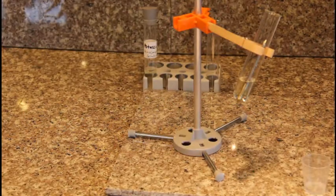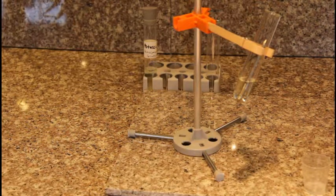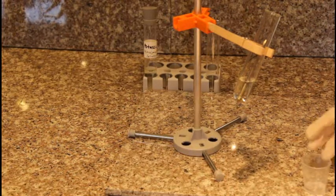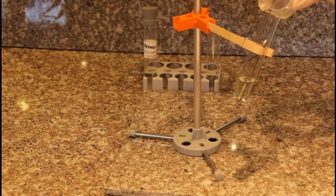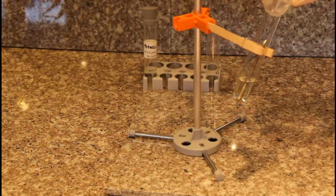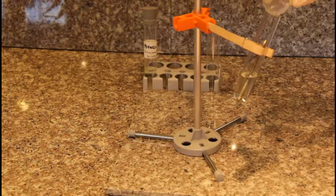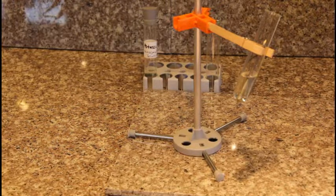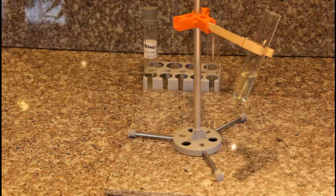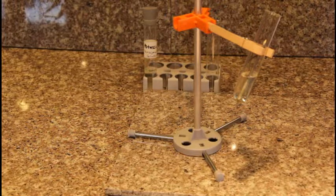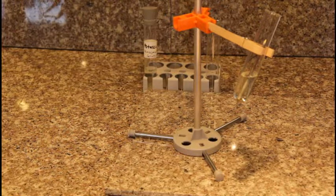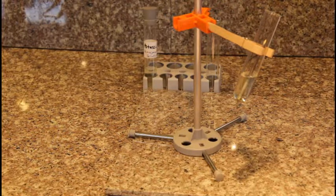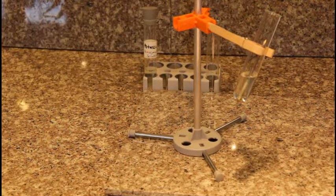To do experiment number 17, I am going to add 2 milliliters of hydrochloric acid to the test tube and nail from experiment number 16. This should gradually cause the nail to turn blue.